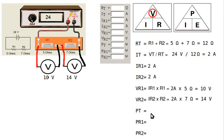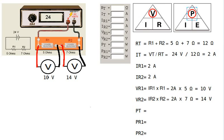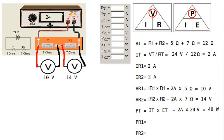Now, what else do we have left? The power. Using our memory aid — P equals I times E, or current times voltage — we can calculate total power. We use total current IT and total voltage from the power supply: 2 amps times 24 volts equals 48 watts. So this entire circuit, including the power supply and both resistors, uses 48 watts of power.